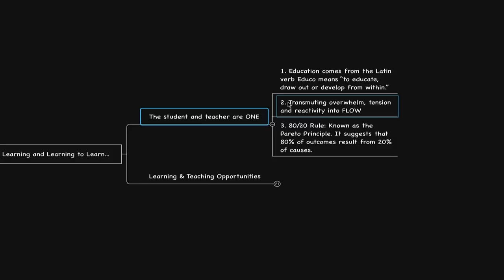What she also found was that spontaneous self-discipline emerged. It appears that they already had self-discipline, and if we align them to their intuition — what they truly desire, their true interests — they would display automatic self-discipline. So number two: transmuting overwhelm, tension, and reactivity into flow.